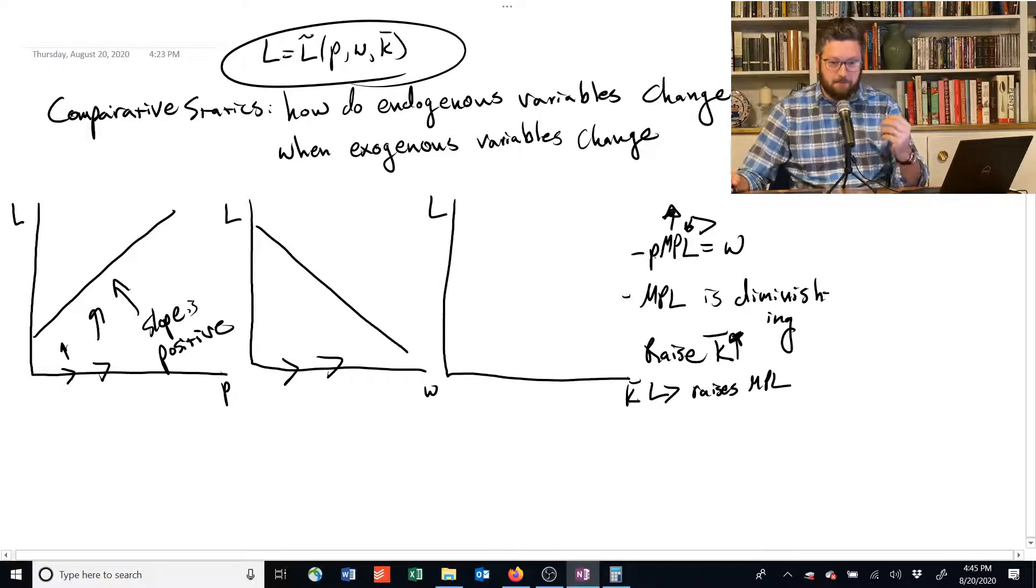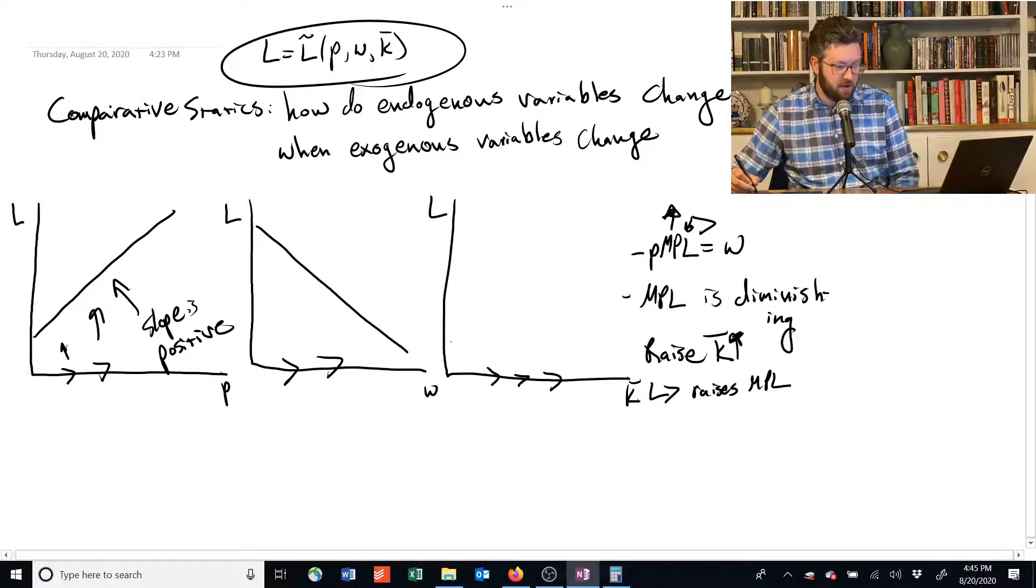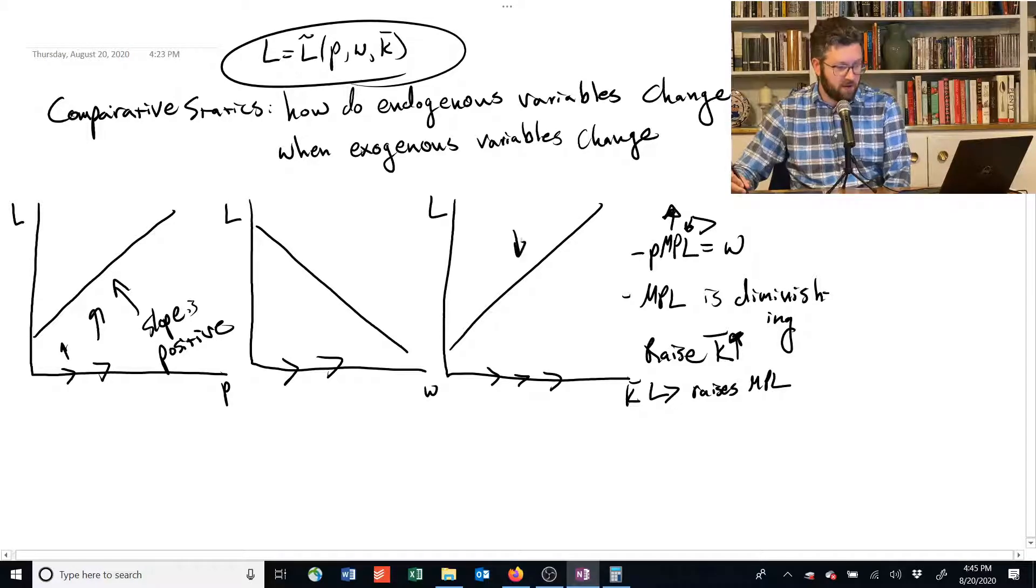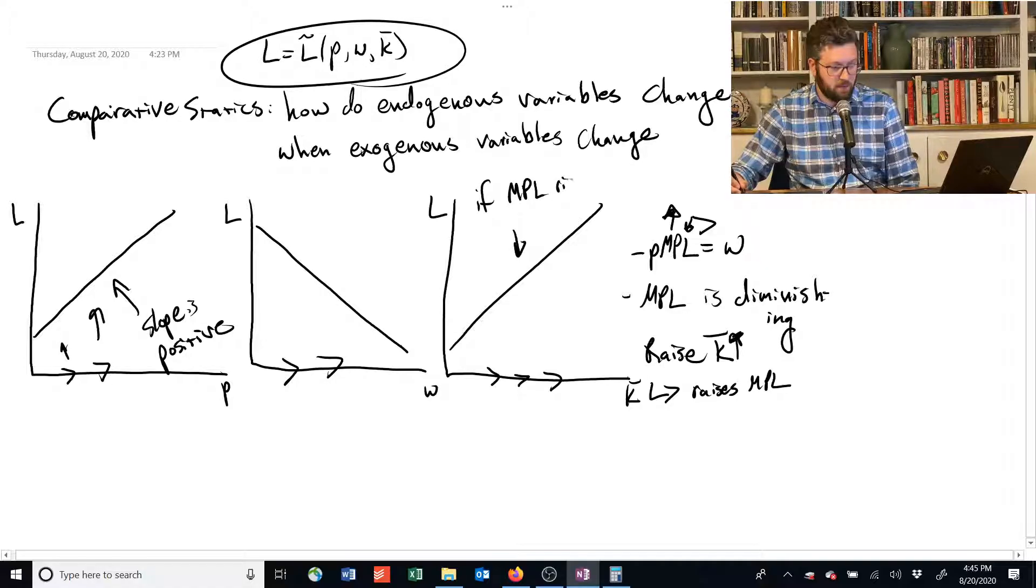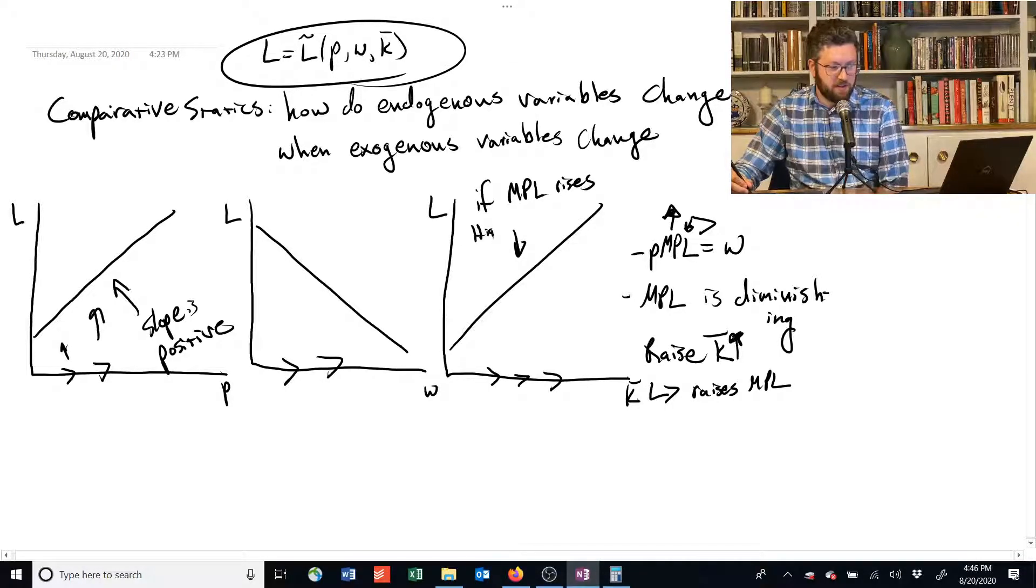and that increases the marginal product of labor, then labor demand actually goes up. And this occurs if these guys are complements, which we typically assume is the case for high-skilled labor.